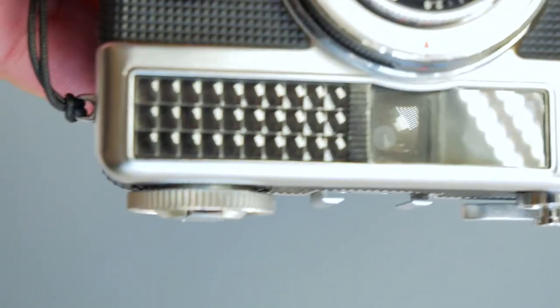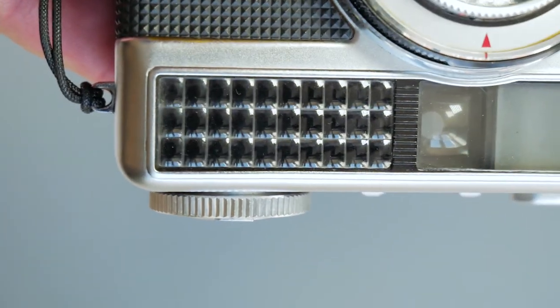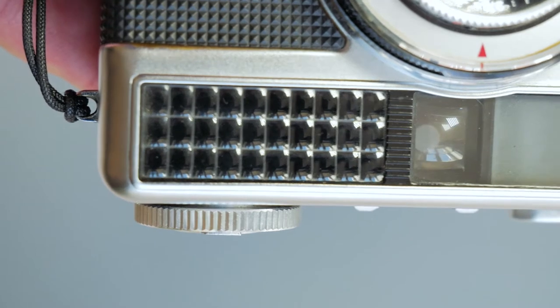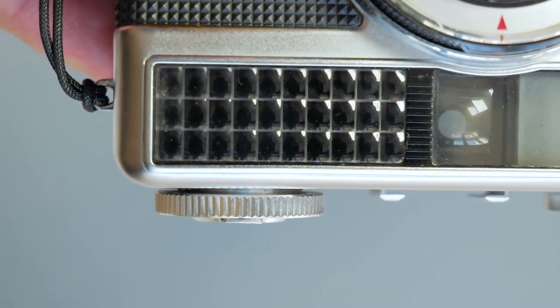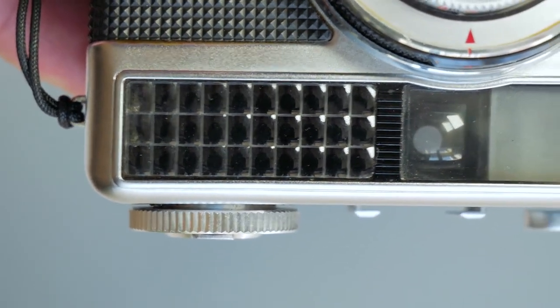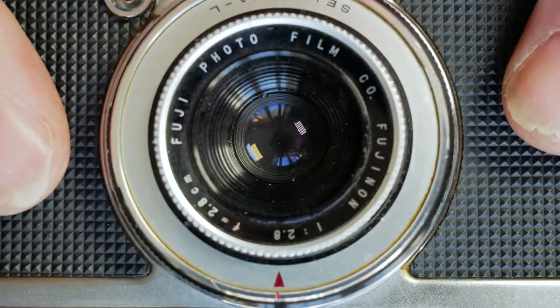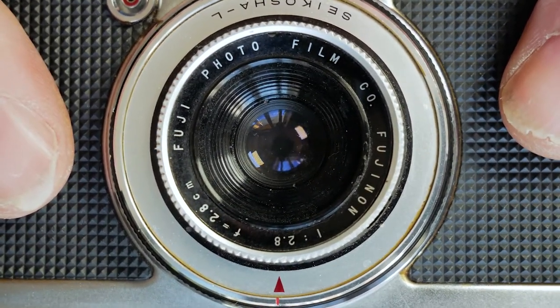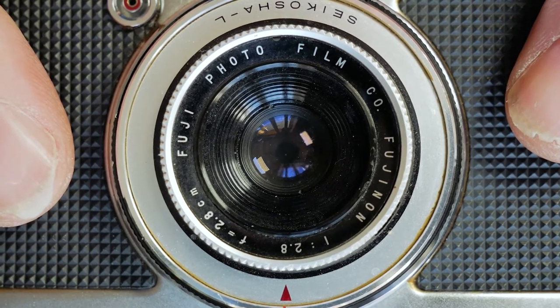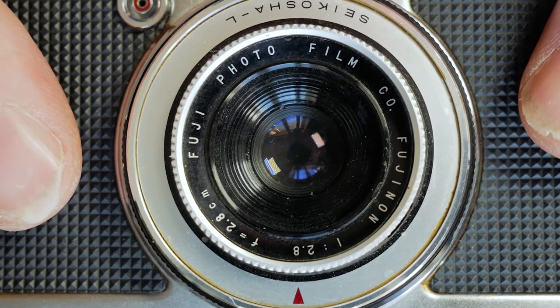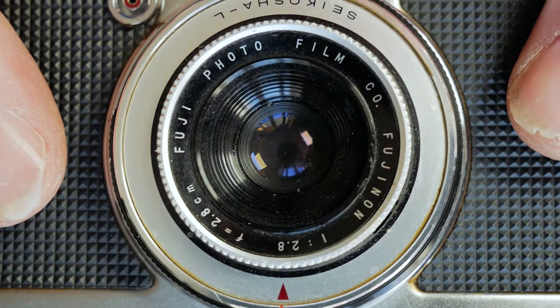On the front, we've got a selenium cell, and on this one it seems to work alright, but they can be a bit problematic, especially with the old age. Yashica half, 28mm, 2.8, F2.8.